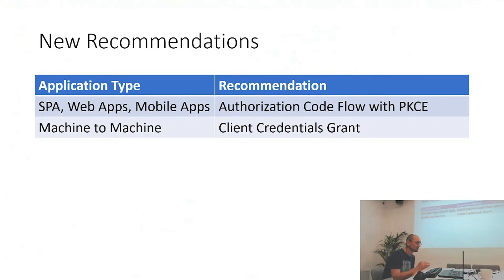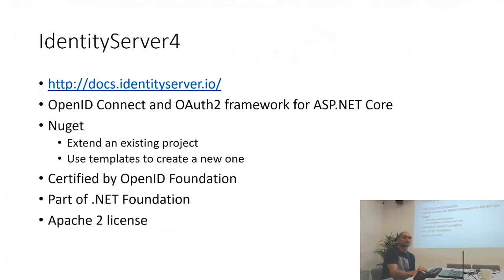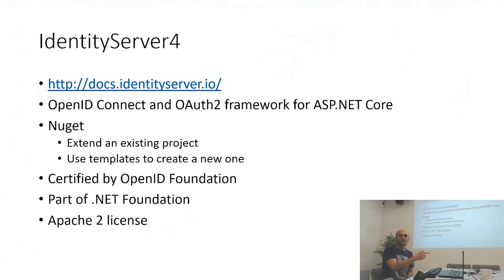Any questions? This is the end of the first section. In terms of claims like email — when you ask for more information, you can use just a part of it. In the authorization code flow it's a bit more complex — you won't get everything in the first redirect, you have to ask for more information. I'll show you the steps in a couple of minutes.